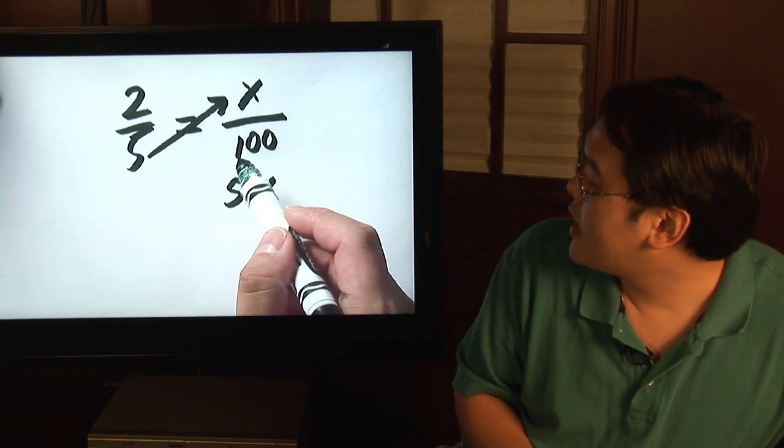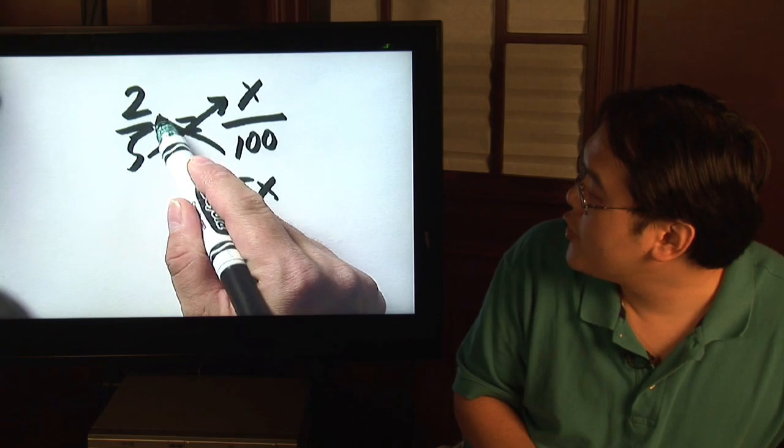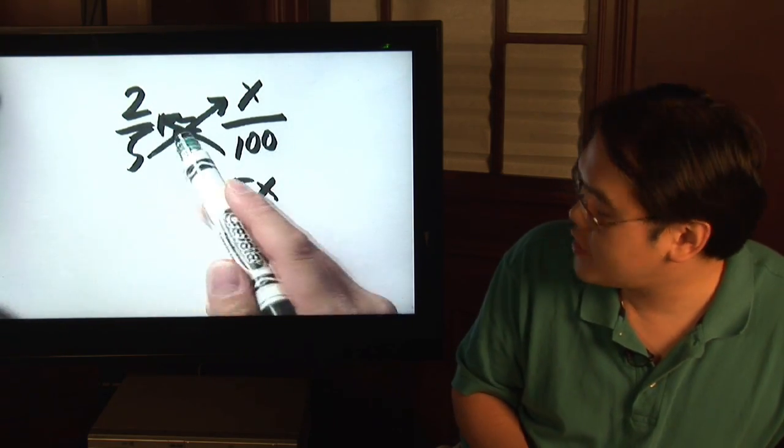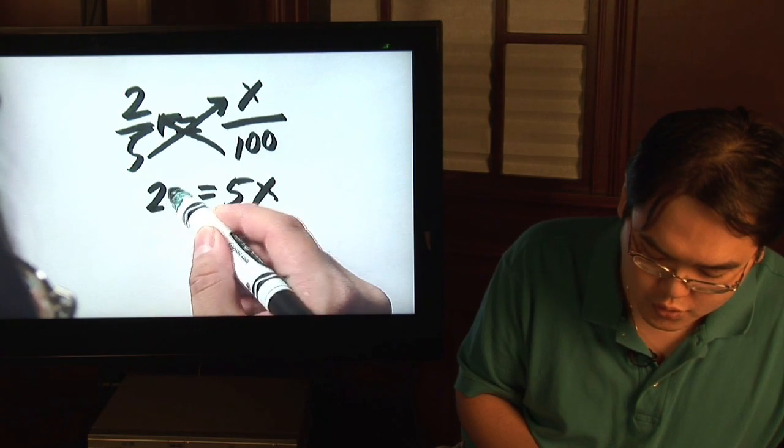And then, you take the other denominator and you multiply it with the numerator on its other side. So, 100 times 2 is going to give you 200.